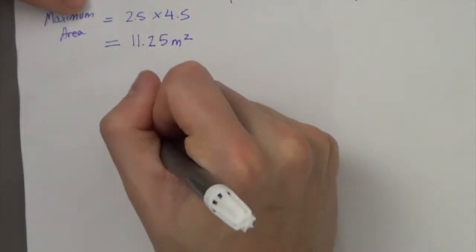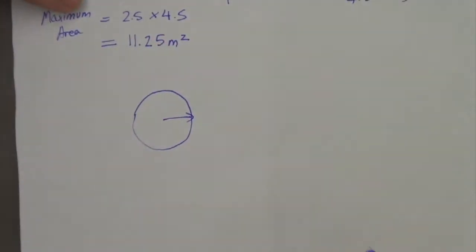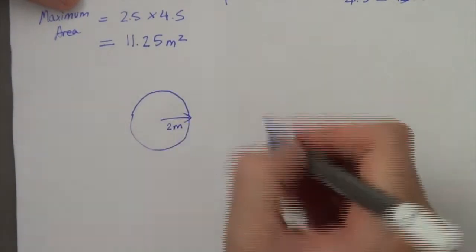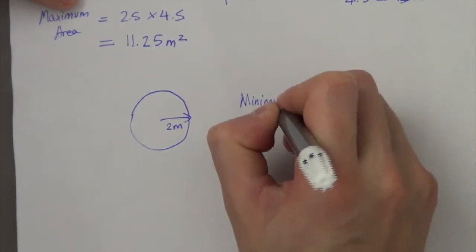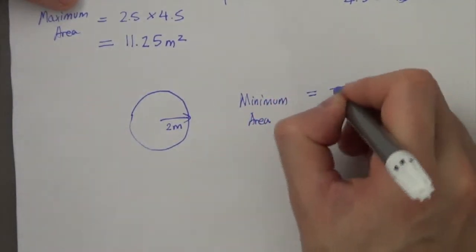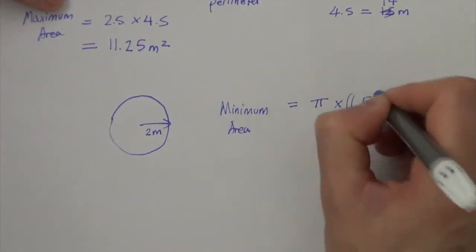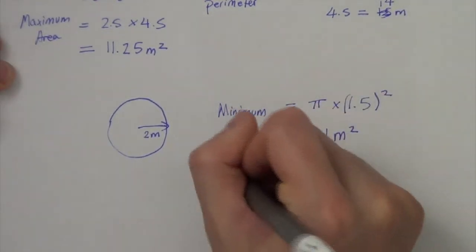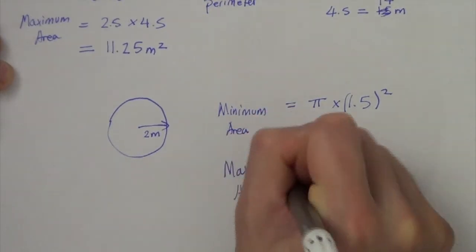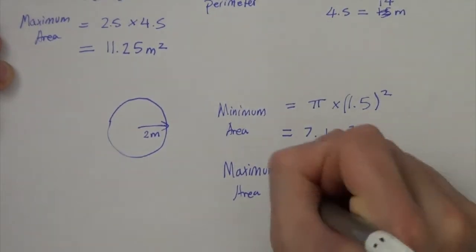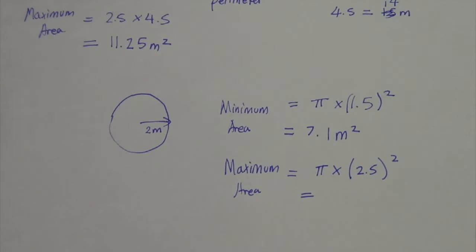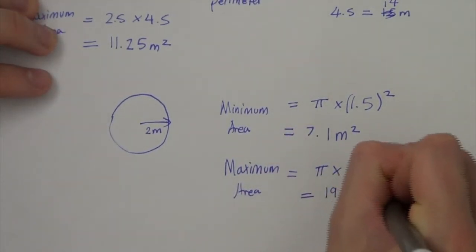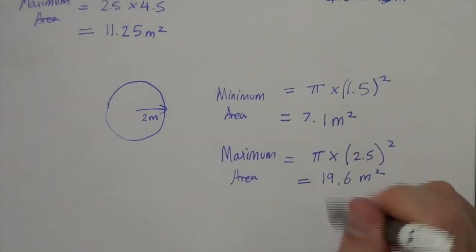Now a question using a circle to practice the pi r squared equation. For a circle of radius 2 meters, find the minimum and maximum area. Minimum area: π × 1.5² = 7.1 meters squared. Maximum area: π × 2.5² = 19.6 meters squared.